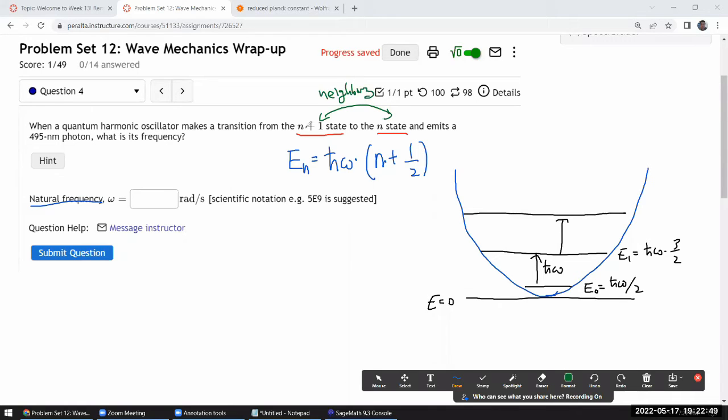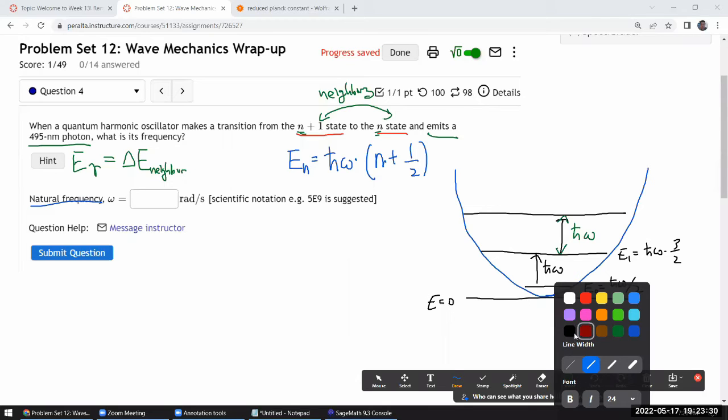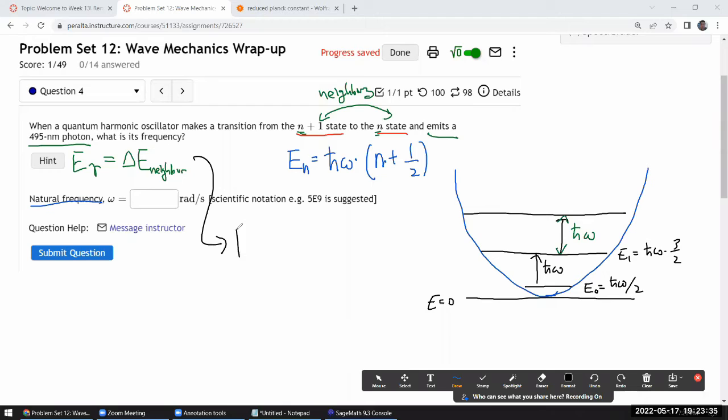So what's important here is that these two are two neighboring states. You actually don't really need to know what value of n it is because this spacing here is always going to be h bar omega between two neighboring states. So what this question is telling you is that it emits this photon and there's some energy of the photon that we are dealing with, and it's saying that this energy of the photon is equal to this difference in the neighboring energy levels of the quantum harmonic oscillator. Now I think a lot of this ends up being super simple. Let's just write it out. So energy of the photon is Planck's constant times the frequency of the photon or I guess since we were given the wavelength it's Planck's constant times speed of light divided by lambda, c over lambda gives you the frequency.